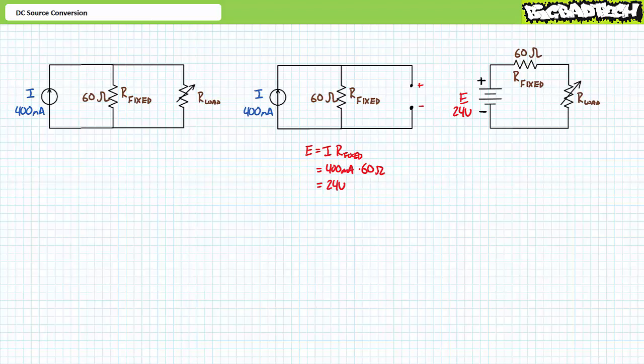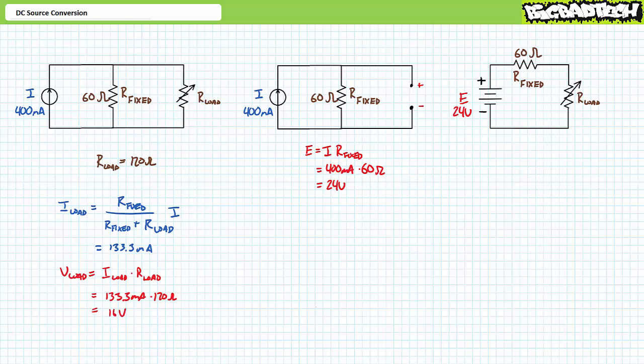Our equivalent source configuration is therefore a 24-volt fixed voltage source in series with a fixed resistance of 60 ohms. If these two different source configurations are truly equivalent, they will induce the same voltage drop across and the same current through a range of variable load resistors. Let's say we set the variable load resistor to 120 ohms. Our original configuration is a perfect setup for the DC current divider rule — we know incoming current and both resistances in a parallel combination. An application of the DC current divider rule demonstrates current through the variable load resistor will be 133.3 milliamperes, and a subsequent application of Ohm's law gives a voltage of 16 volts.